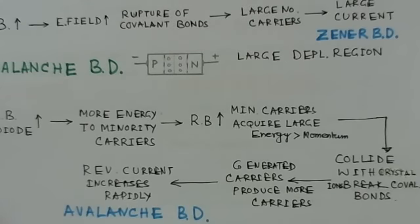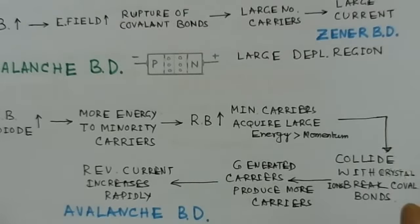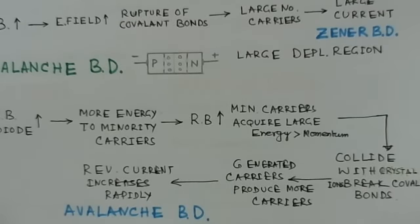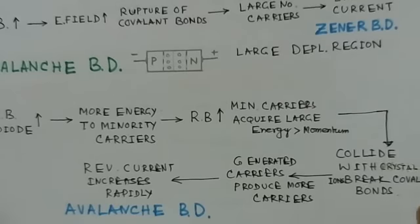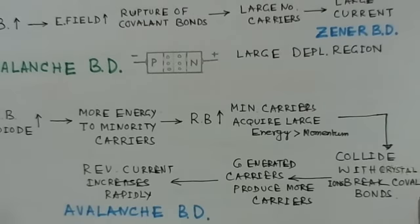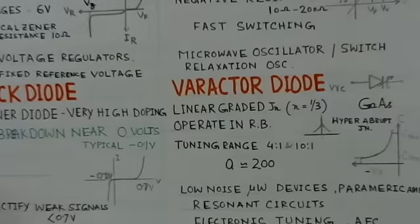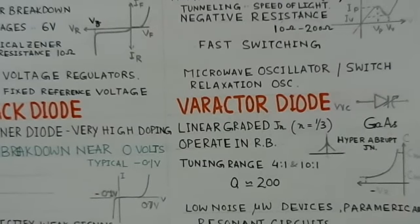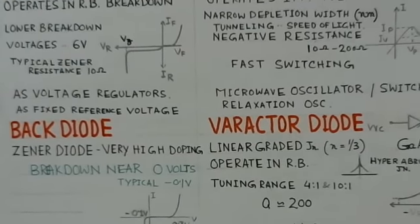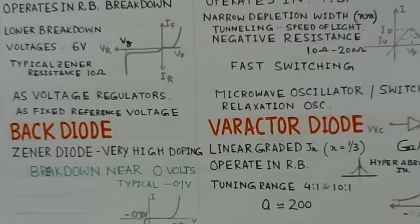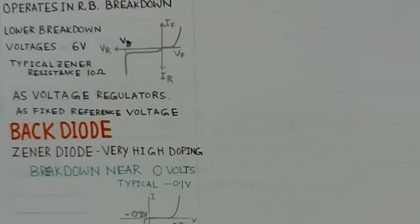The avalanche breakdown is a mechanism which is detrimental to the diode. After knowing these two mechanisms, we will look at the different kinds of special purpose diodes.